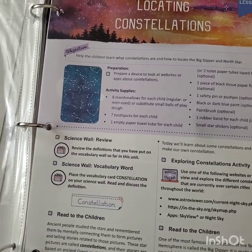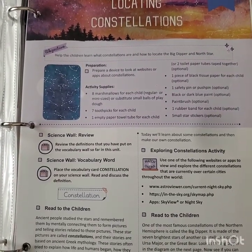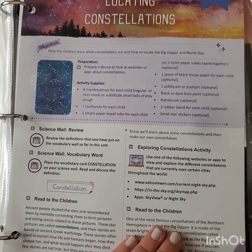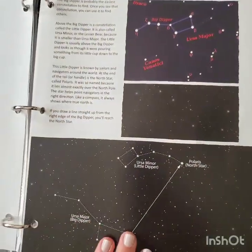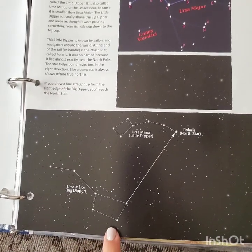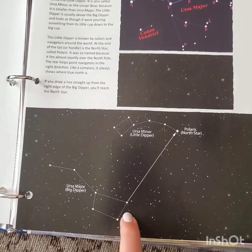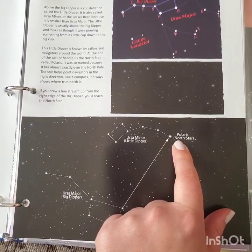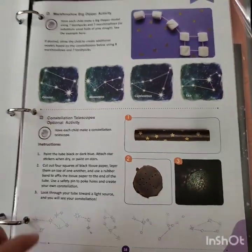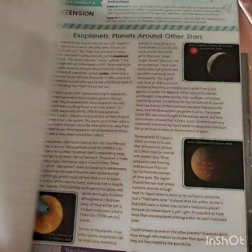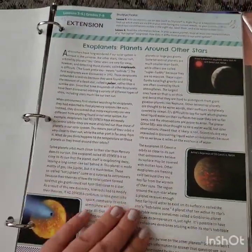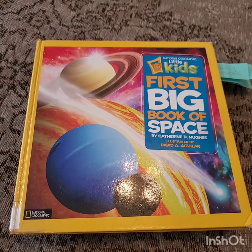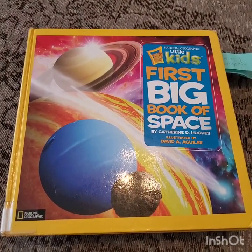Lesson three's objective is to help the children learn what constellations are and how to locate the Big Dipper and the North Star. It goes into the fact that the Big Dipper has two pointer stars that point to Polaris, which is the North Star. It has some fun activities that go with it. We didn't do the extensions, but we added a lot of supplemental material to this curriculum — mostly books.